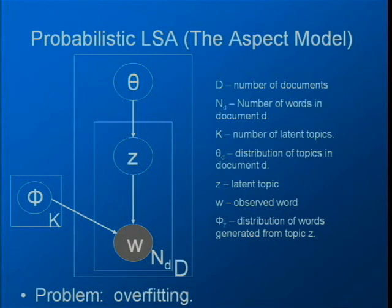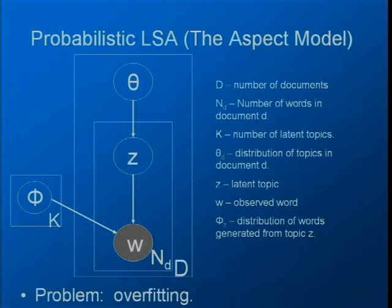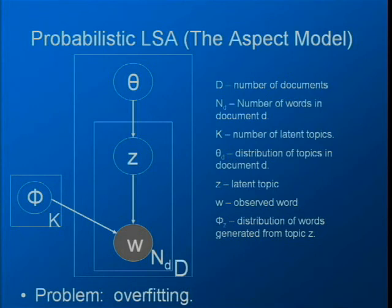The difference from Hoffman's original presentation is that in his work there is a random variable d for the document and theta and phi are parameters. After presenting this model, Hoffman suggested using an EM algorithm to estimate parameters theta and phi. The EM algorithm had an overfitting problem, which he addressed with a tempered EM algorithm.